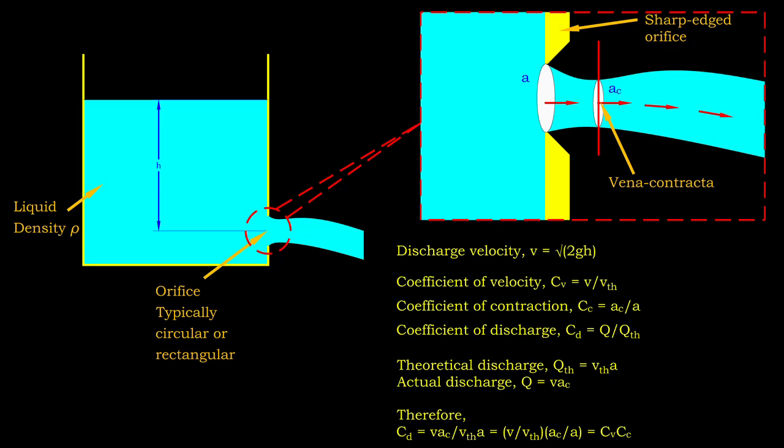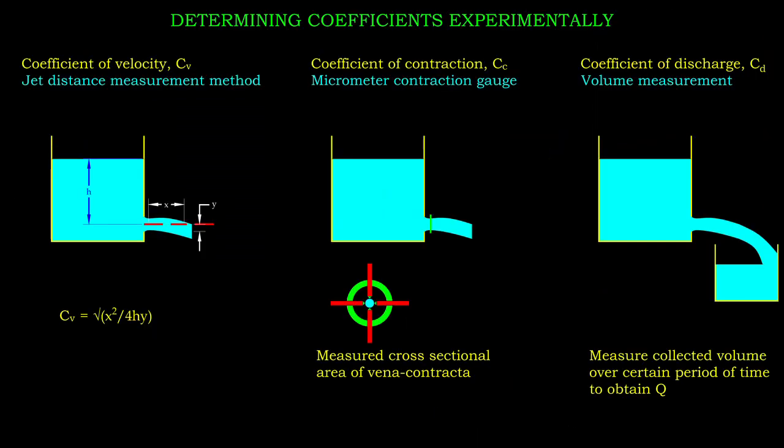There are several ways to determine the coefficients of an orifice experimentally. The coefficient of velocity may be determined using the jet distance measurement method. By measuring the time taken for the jet to travel a certain distance, we can easily calculate the actual flow velocity. We then divide the result by the theoretical velocity to determine cv.